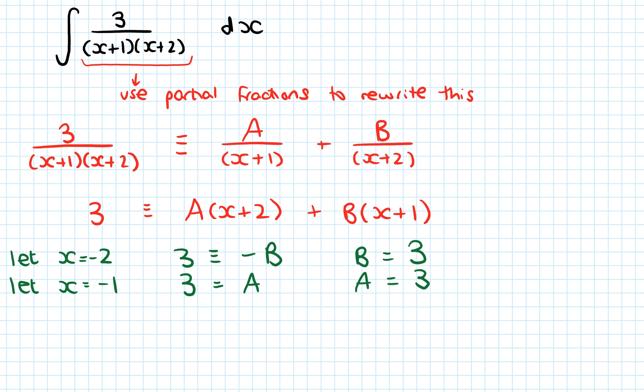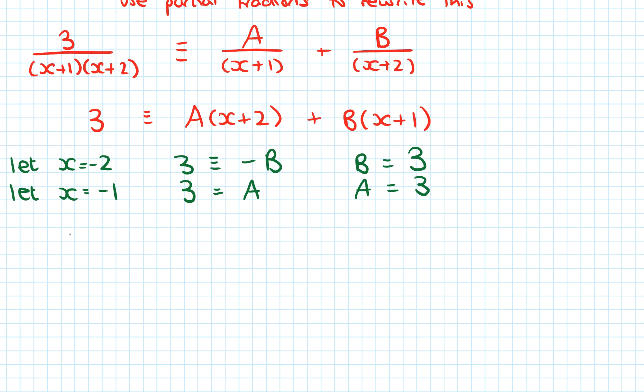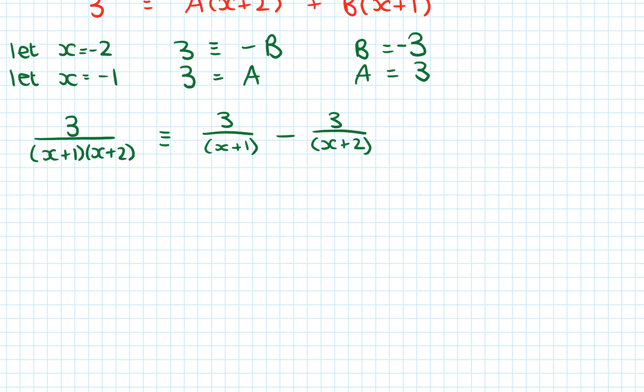So what I now know is that this fraction, the 3 over x plus 1 times x plus 2, can be written as 3 over x plus 1 minus 3 over x plus 2. Sorry, there's a minus in there, I forgot.